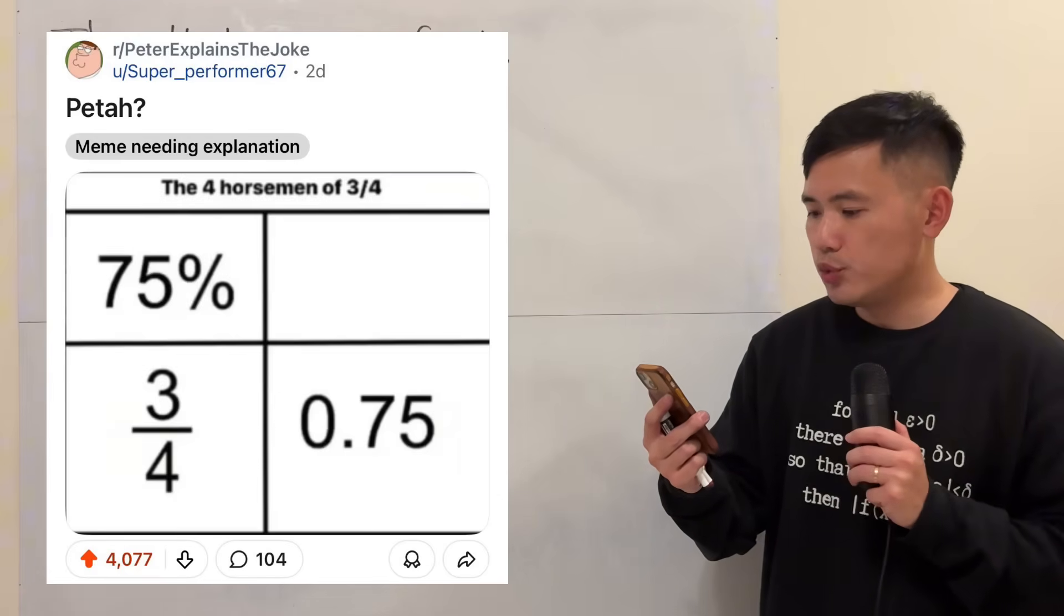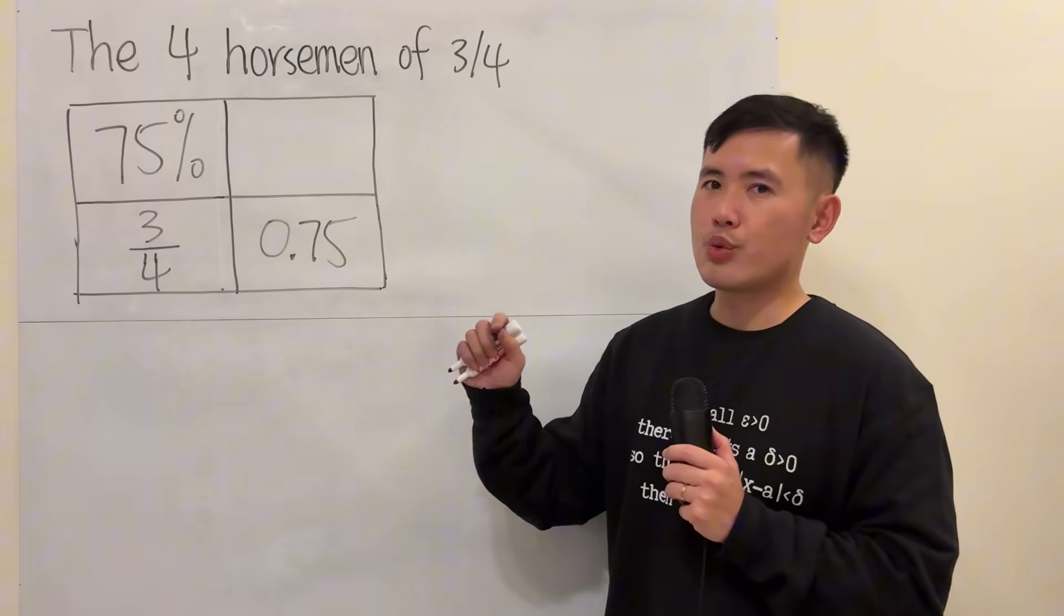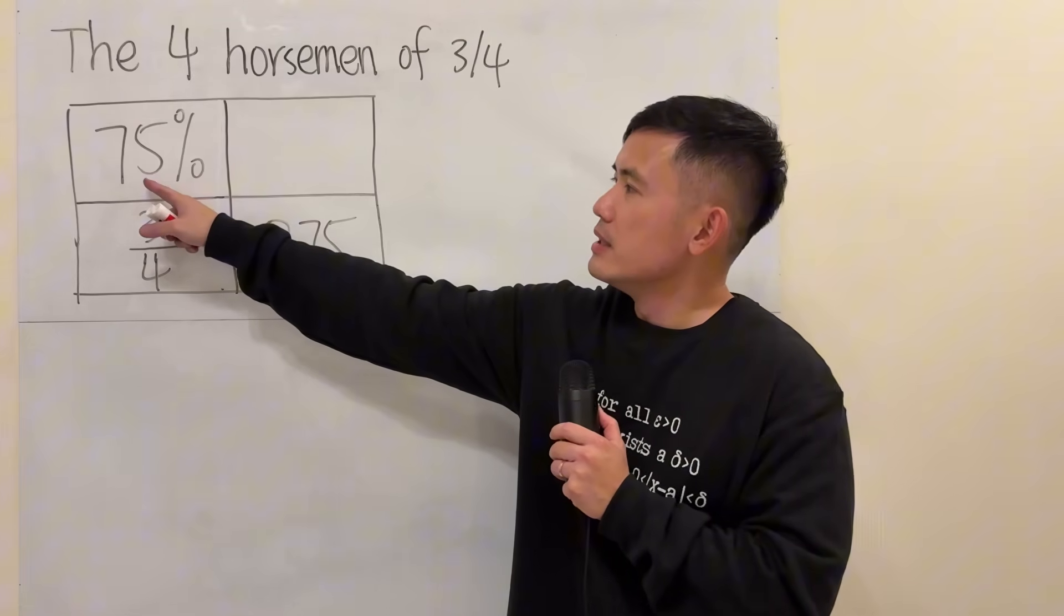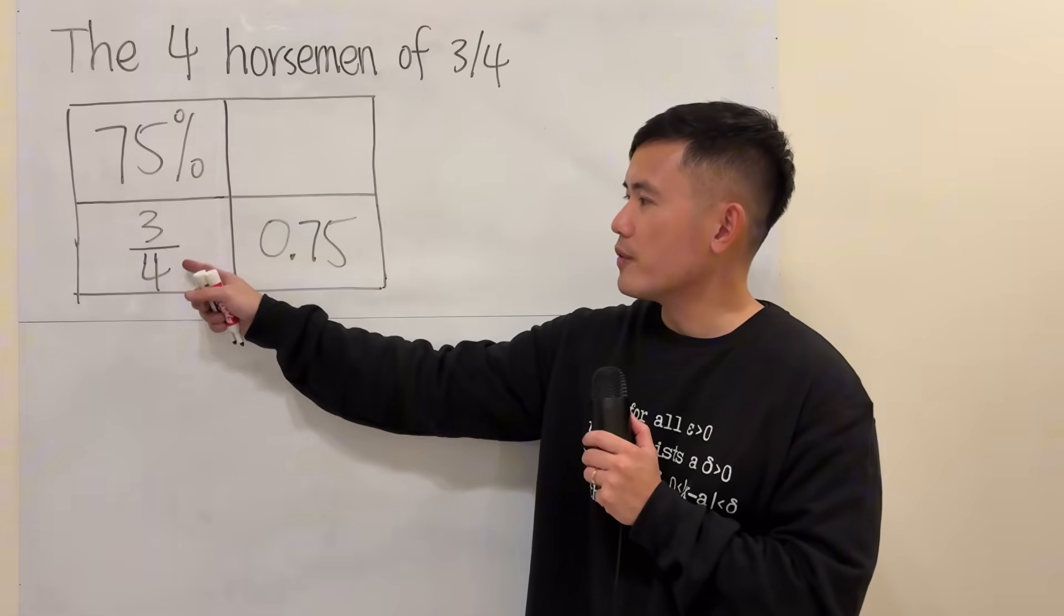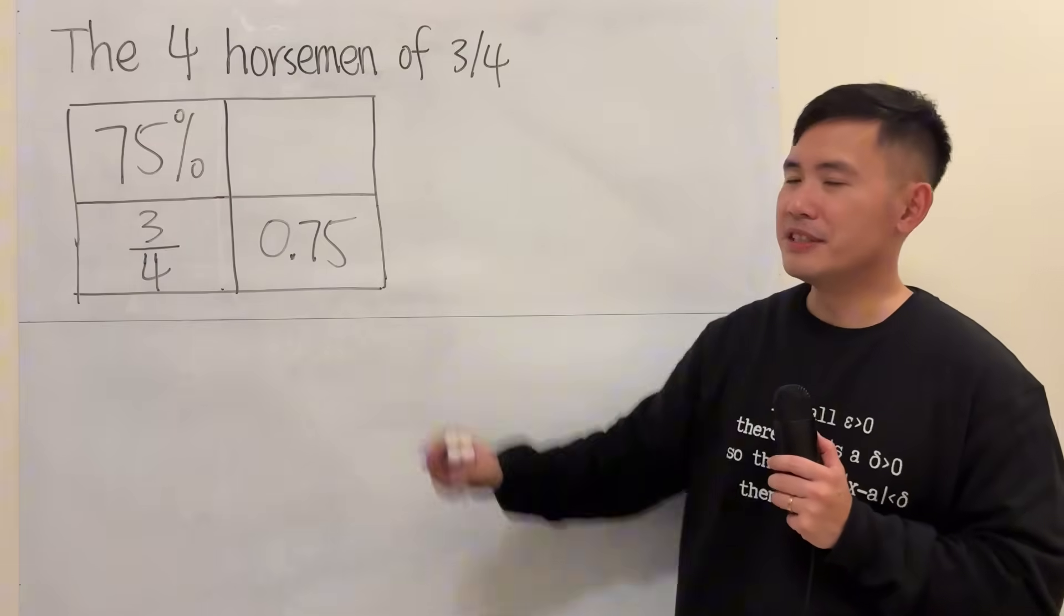The four horsemen of 3 over 4. Okay, let's take a look. Right here we have this diagram. The first one says 75%, and this one says 3 over 4, and this one is 0.75, and this one's missing.